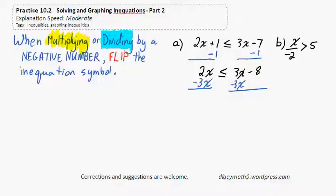Don't worry, it will come up. Just a sec, here we go. 2 minus 3 is negative 1. This is negative x is less than or equal to negative 8.